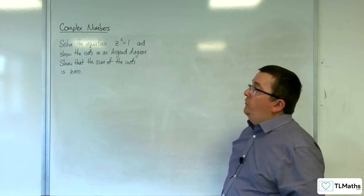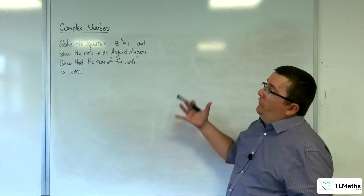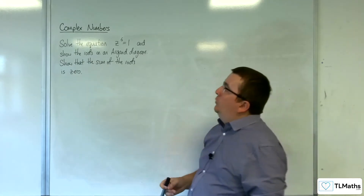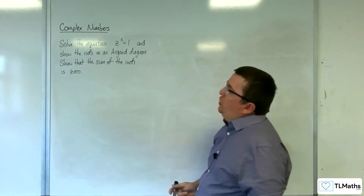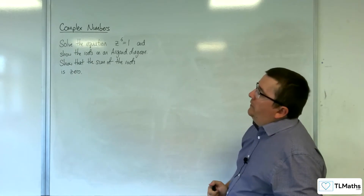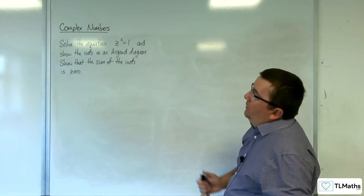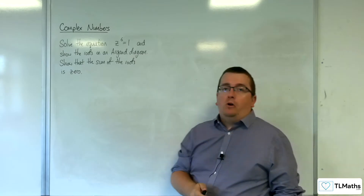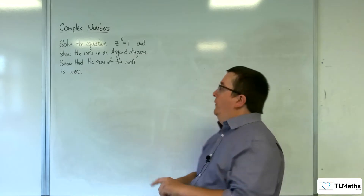In this video, we're going to solve this problem. We're going to solve the equation z to the 6 is equal to 1, and show the roots on an Argand diagram. We're then going to show that the sum of the roots is 0.